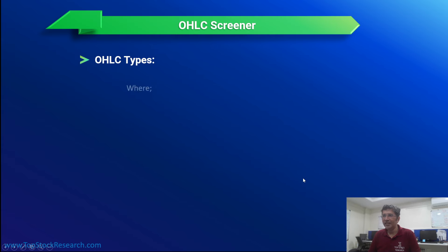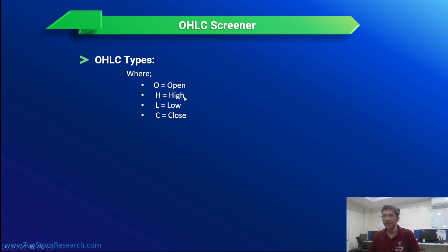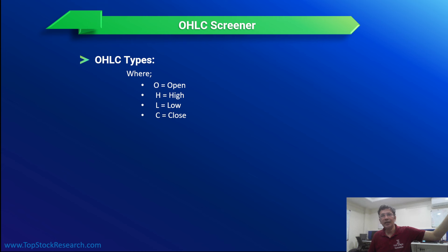What is OHLC? O stands for Open, H stands for High, L stands for Low, and C stands for Close. When the market opens — say at 9:15 — that becomes the opening price. Whatever price the market closes at is C. During the course of trading, the market can go beyond the open or close price, rising to a certain limit or falling to a certain limit.